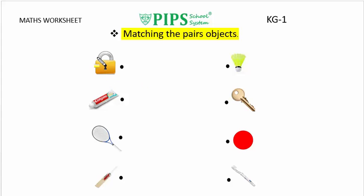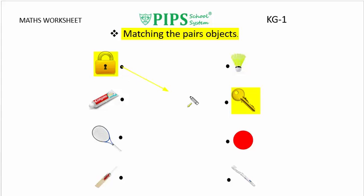The first object is lock. Its pair is key. Let us match the lock with its pair like this.